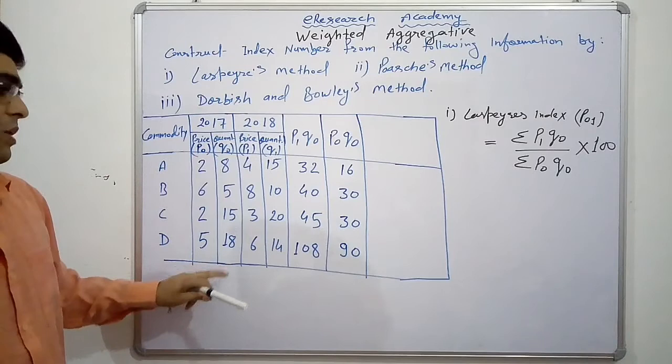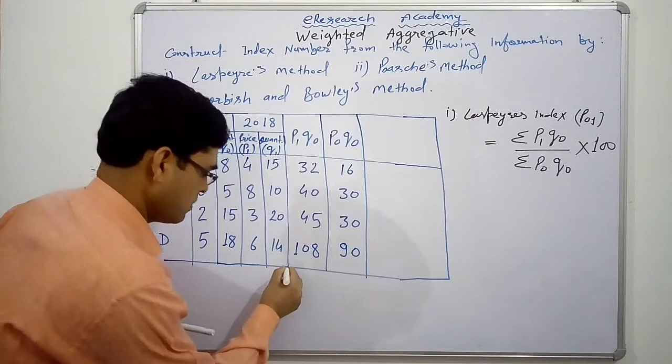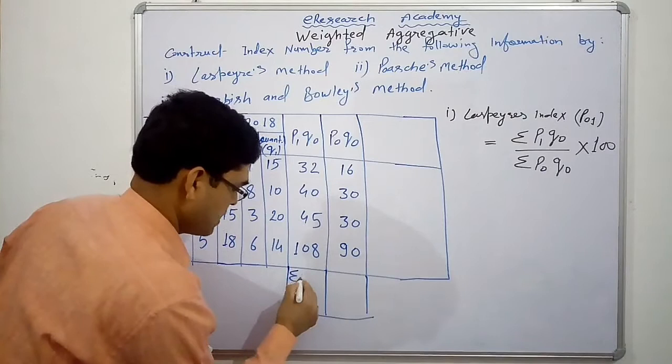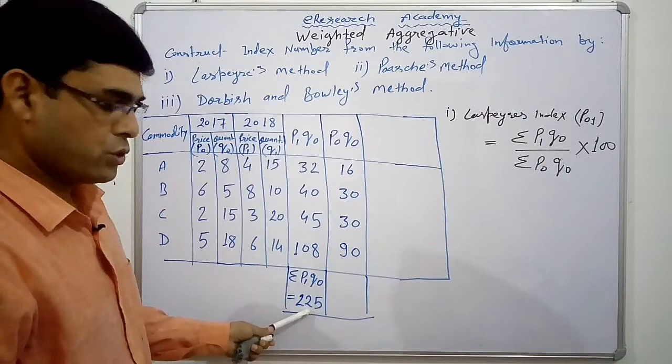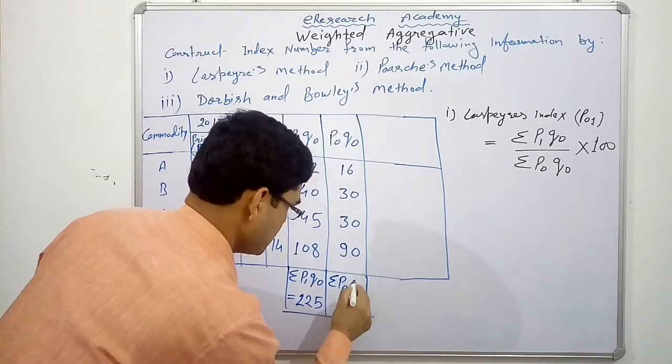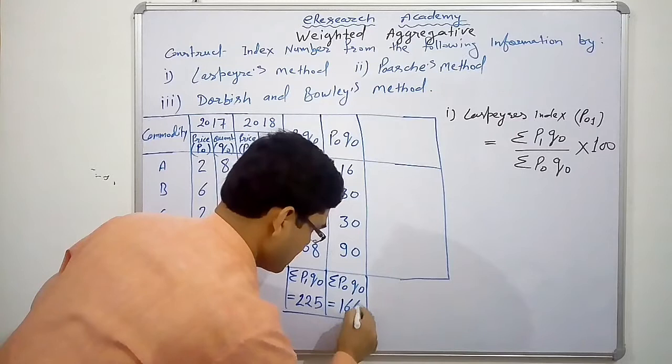Now get the total of this one, we need the summation of this one. So the summation is, this is sigma P1 Q0 equal to, it comes 225. If you get a total, you will find 225. Similarly, this one is sigma P0 Q0, we have 166.